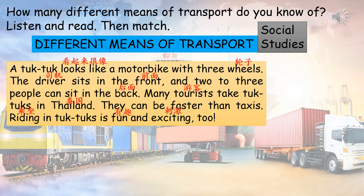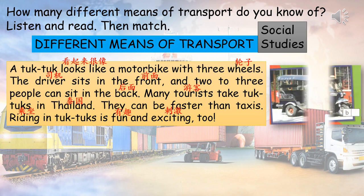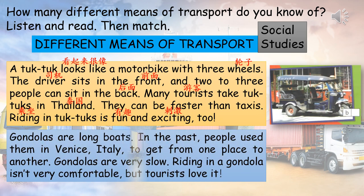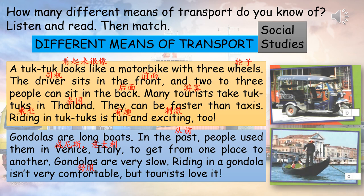Two. Gondolas are long boats. In the past, people used them in Venice, Italy, to get from one place to another. Gondolas are very slow. Riding in a gondola isn't very comfortable. But tourists love it.